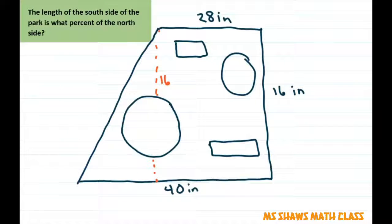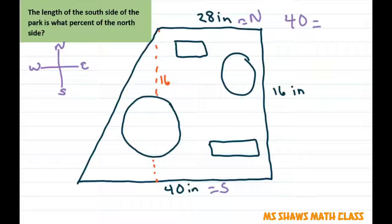And the last question says the length of the South side. So this is like North, South, East, West. And so they want to know what percent the length of the South side, which is 40. So this is your South side. This is your North side. So the South side is what percent. So let's put X percent of the North side, which is 28.